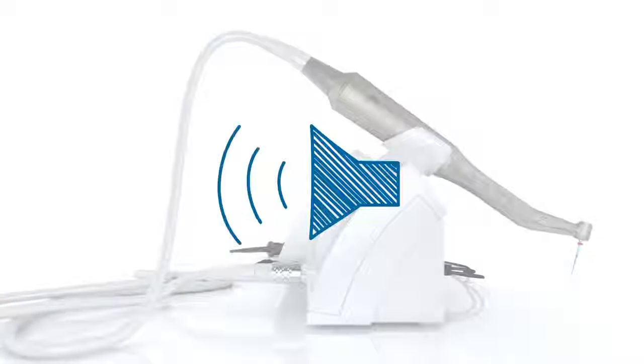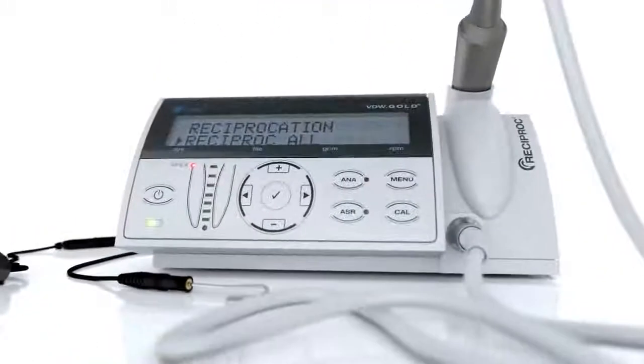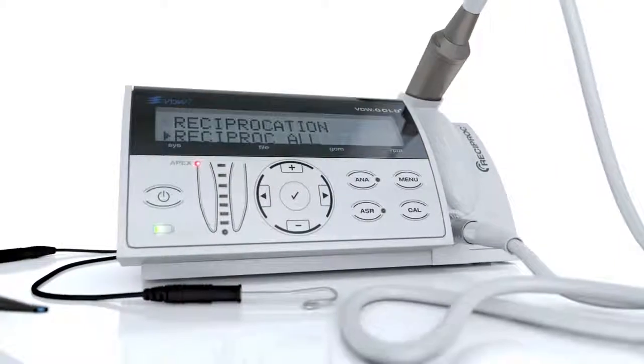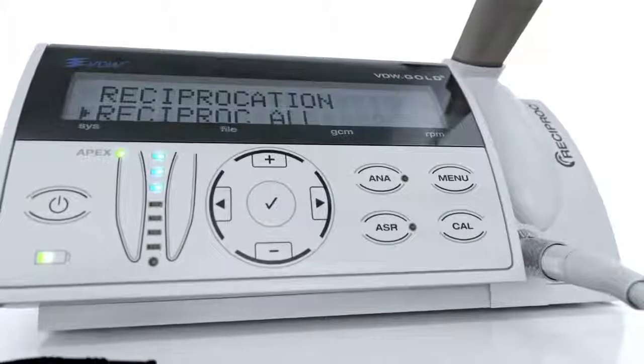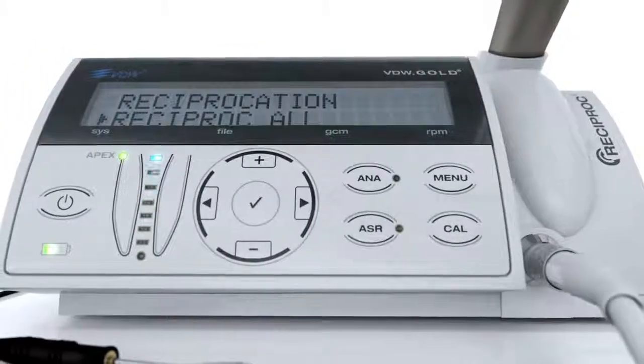The VDW Gold Reciproc comes with an integrated apex locator. The LED indicator for electronic length determination is located on the left. More details on this in a separate video.